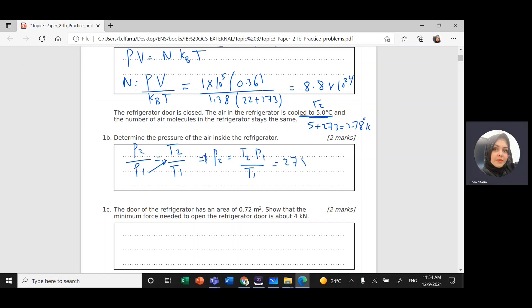So 278 times 1 times 10 to the power 5 divided by 295, and this will give us 9.4 times 10 to the power 4 Pascal.